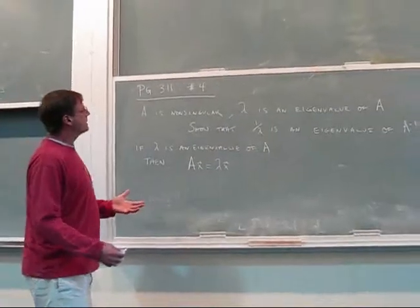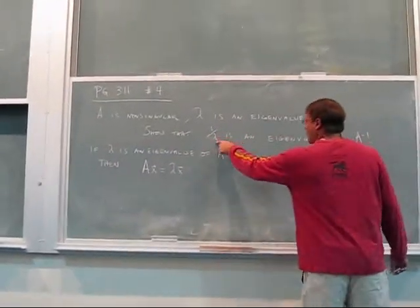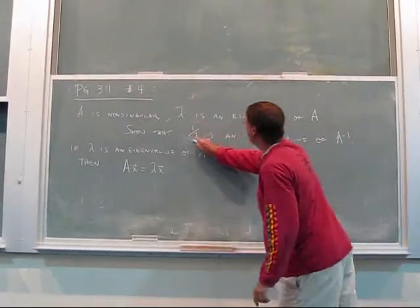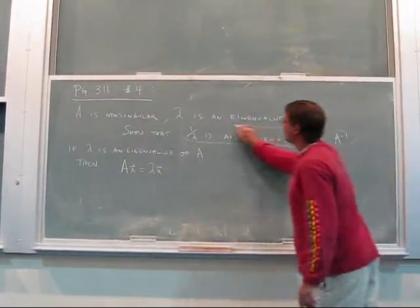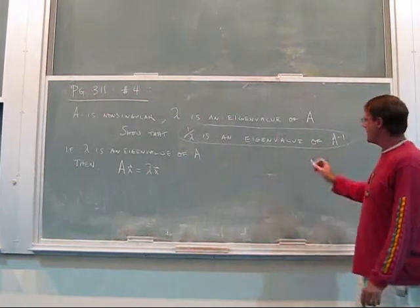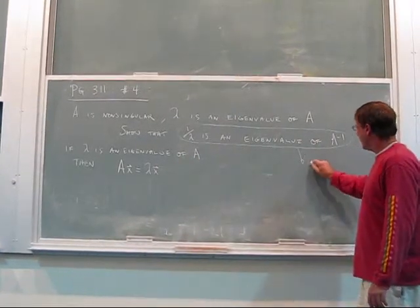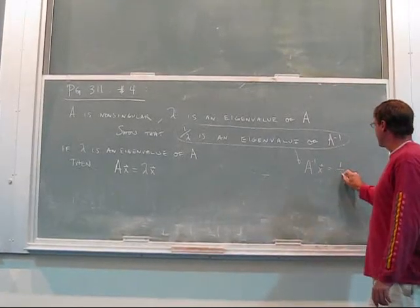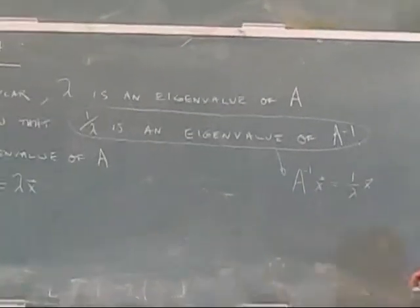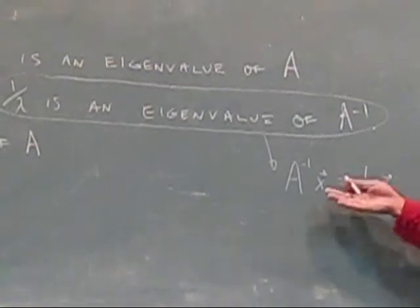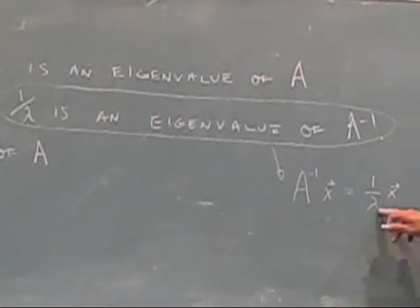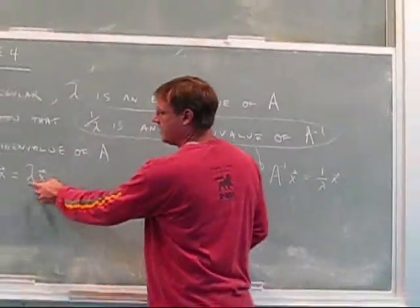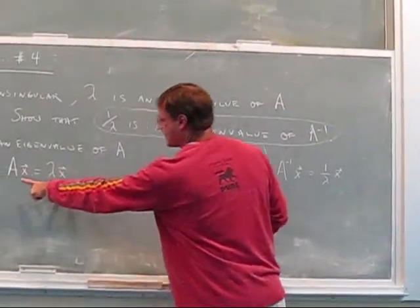OK, so the goal is that 1 over lambda is an eigenvalue of A inverse. So what does this mean? What is it I have to show? The last line in my proof had better be A inverse x equals 1 over lambda x. You see, because that means that 1 over lambda is an eigenvalue of A inverse, just like lambda being an eigenvalue of A means this.